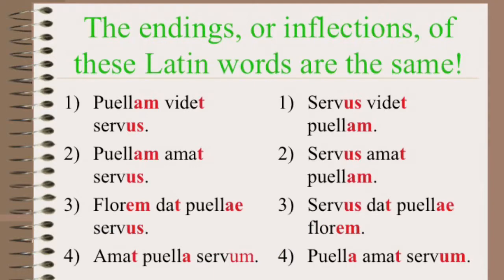All of the words in these sentences are related to one another. One of the words is an action, one of the words does the action, and one of the words is having something done to it. So how am I supposed to know which word is doing what thing? Sometimes vocabulary will help, but not always. Videt means to see or sees, so vocabulary helps me to understand that videt is the verb in sentence number one.